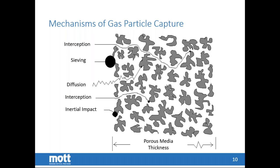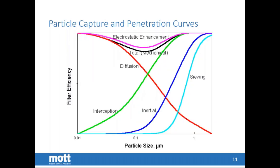With interception, the particle rides in the gas stream longer than very small or very large particles, so filtration depth is designed to ensure we capture that size particle — called the most penetrating particle size — within the depth of the media. This graph shows the relationship between particle size and filter efficiency. Diffusion is the dominant mechanism at very low sub-micron particle sizes, while sieving is predominant for large particles greater than about one micron.